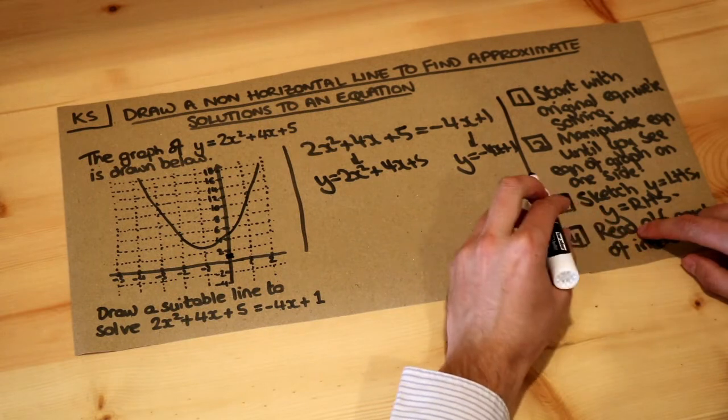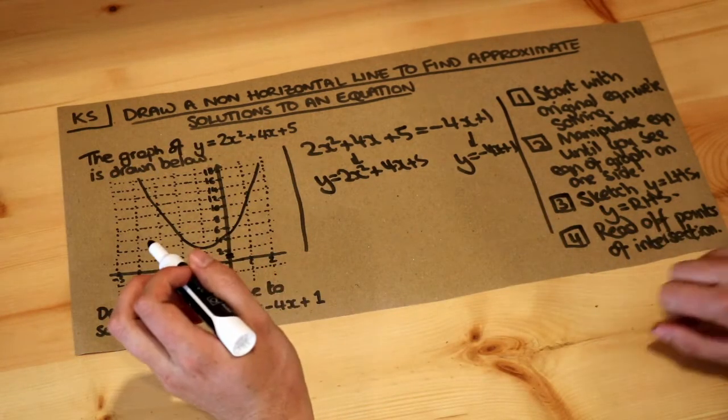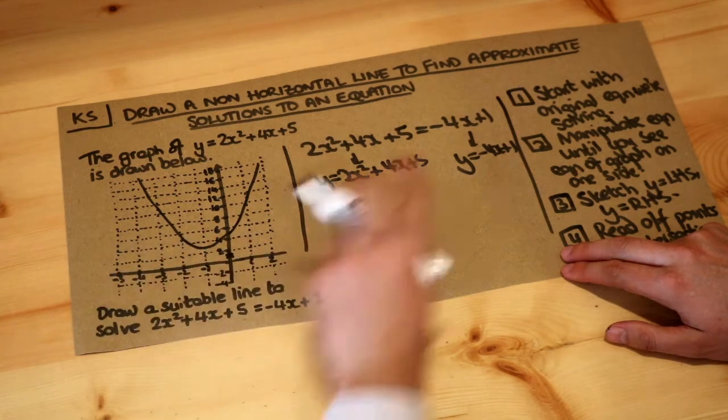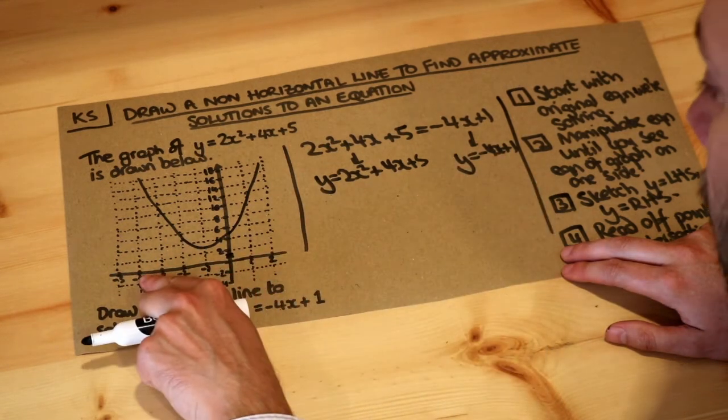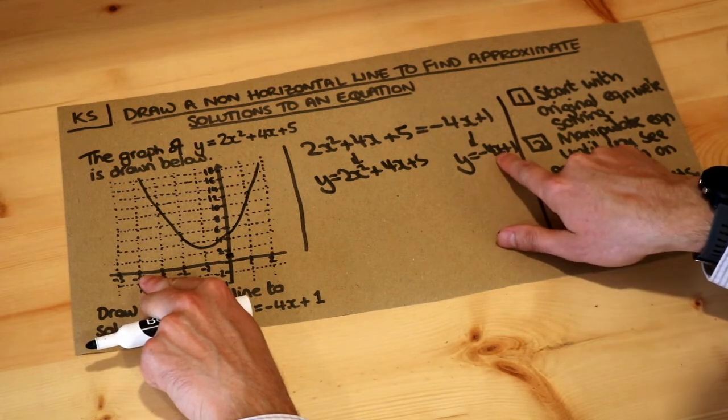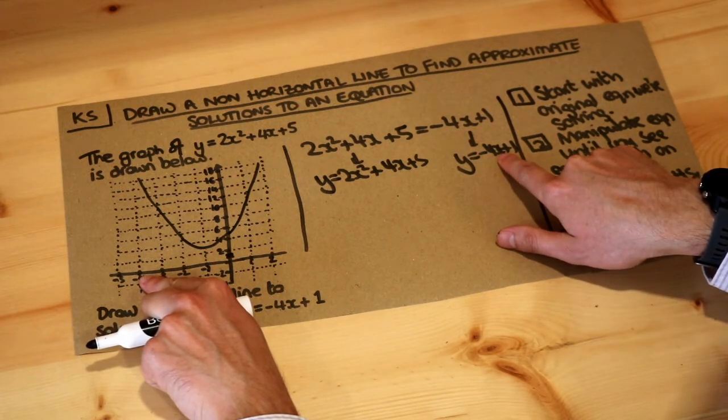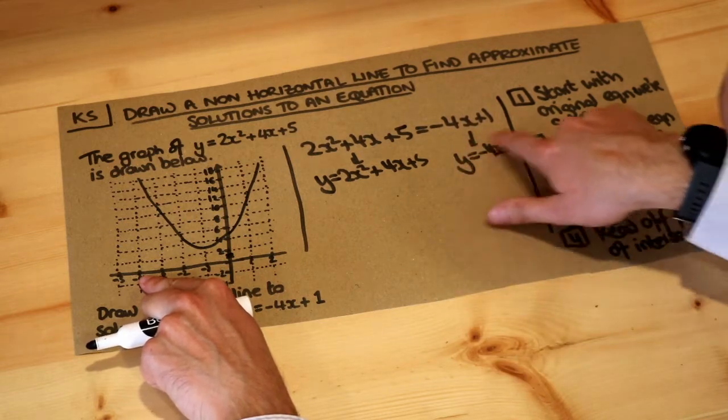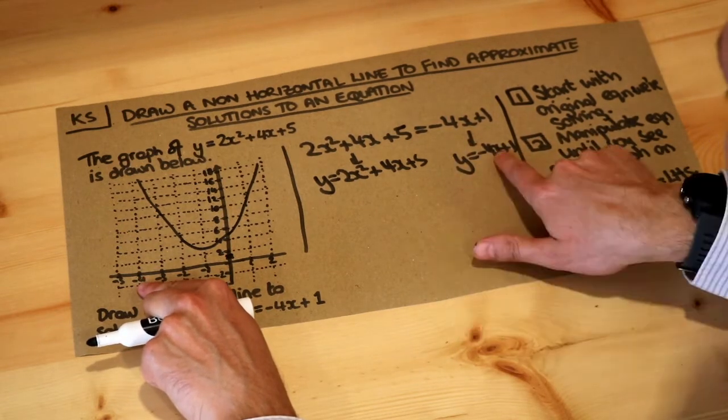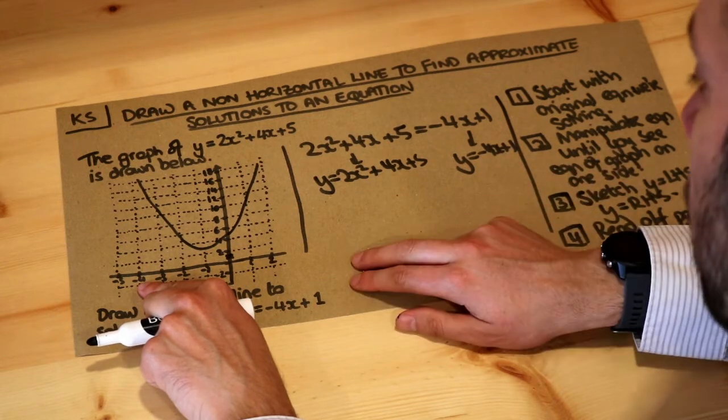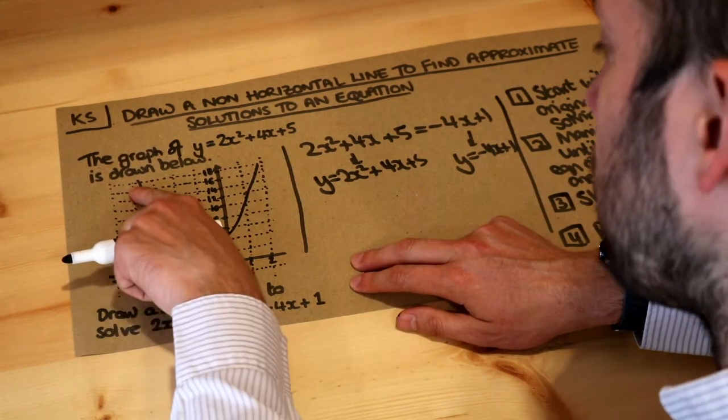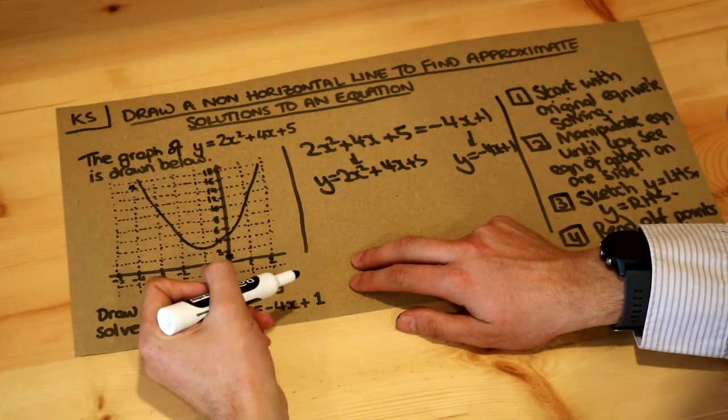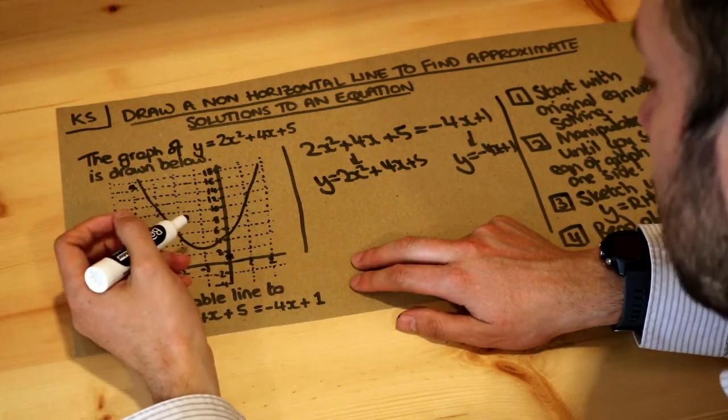The gradient is minus 4, so it will be going downhill. The easiest way to plot this is to choose a value of x. If x was minus 4, so over here, minus 4 times minus 4 would be 16 plus 1 would be 17. So on this straight line equation, when x is minus 4 and we substitute minus 4 into it, we get y is 17. So minus 4, 17 will be up here, and then we can just connect this using a straight line. You would usually have a ruler.